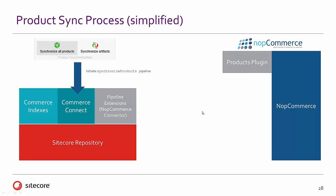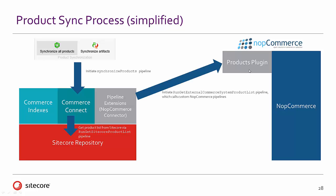In summary, first we're initializing the synchronized products. As mentioned, the very first thing is synchronizing those artifacts — manufacturers, lookups, resources, etc. — any of those things that products depend on. Then each one of these sync processes tends to go through the same process: connecting to Sitecore, connecting to that external system via the products plugin, and doing a reconciliation process — basically saying what doesn't exist in Sitecore and what doesn't exist in that e-commerce system.